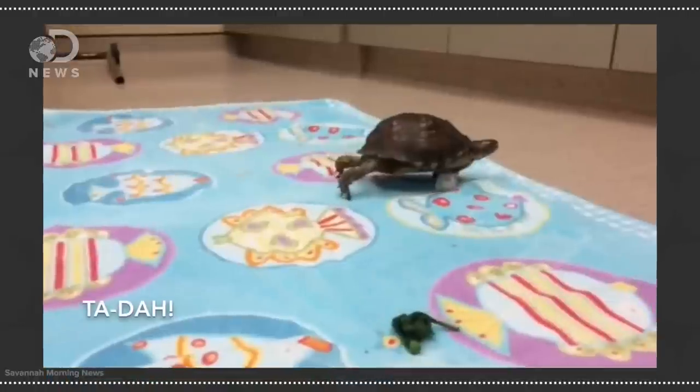...the students designed a ball caster-like leg that attaches to her shell, a design which can help her easily move in any direction. Using the school's 3D printer and a little help from their teacher, they helped Stumpy not be so stumpy anymore. Maybe she should be called Rolly.